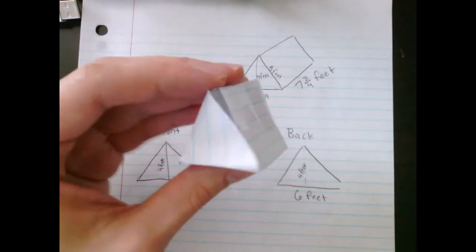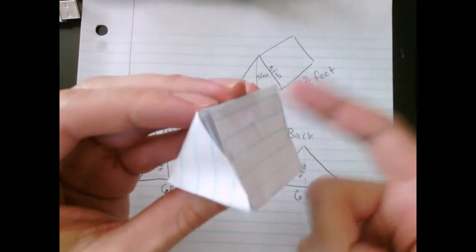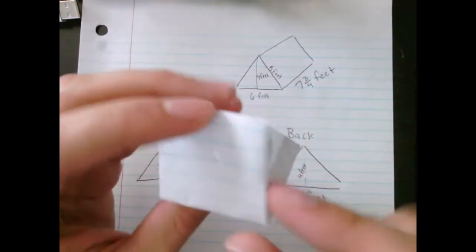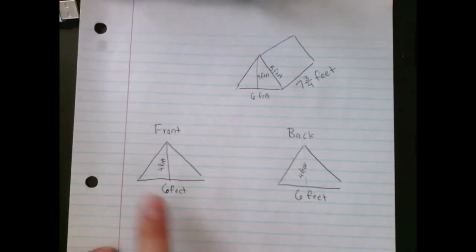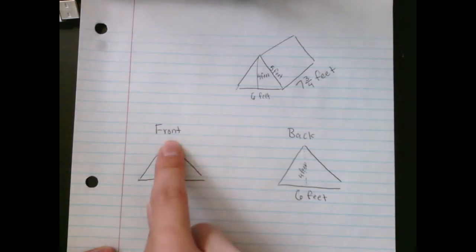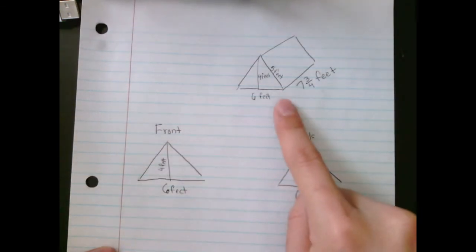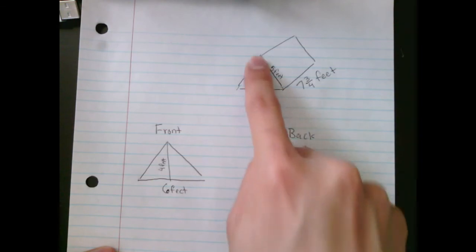So we're talking about this side right here and this back side right here. Keep in mind, they're exactly the same. So I got 6 feet by 4 feet because that's what our image shows. It's 6 feet by 4 feet.